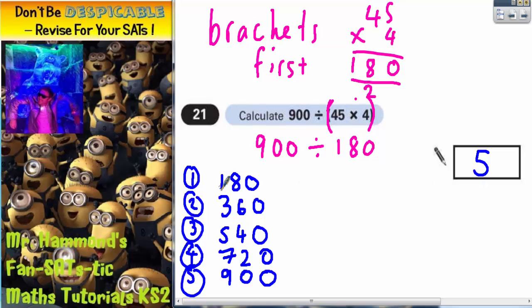But all we did was we actually counted up in 18s and then put the 0 on the end. So 18, 36, 54, 72, 90. Put your 0 on the end and you get up to 900. 5 eighteens make 900.